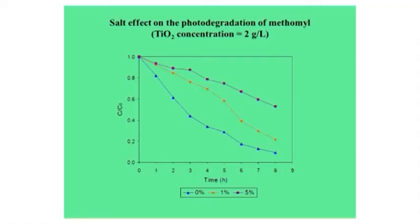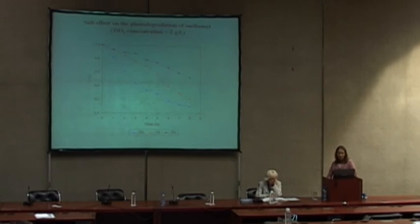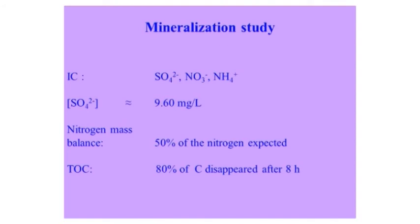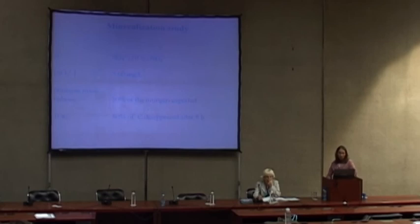This slide shows the effect of chloride ions on the photodegradation rate of the pesticide methomyl. Our results show that a decrease in degradation rate was observed in the presence of chloride ions. Regarding the mineralization study of methomyl, according to ion chromatographic data, mineralization of methomyl led to sulfate, nitrate, and ammonia ions during the photodegradation process, and we found at the end of the process about 8.6 micrograms per liter of sulfate ions, close to the maximum expected value.